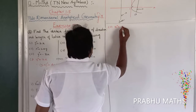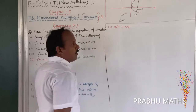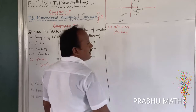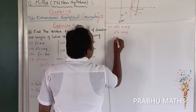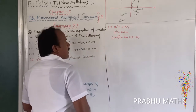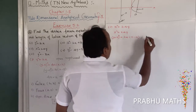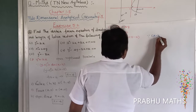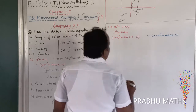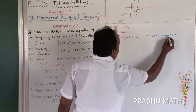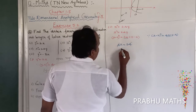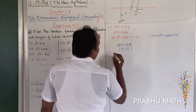Second subdivision: x squared equal to 24y. Rewrite in standard form as x minus 0 whole square equal to 24 into y minus 0. The standard general form is x squared equal to 4a into y. Comparing, 4a is equal to 24, so a is equal to 6.